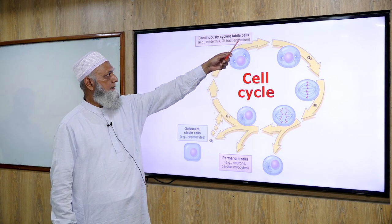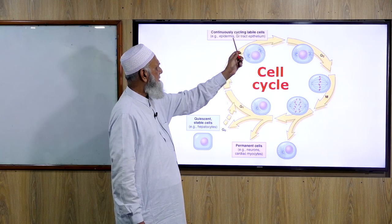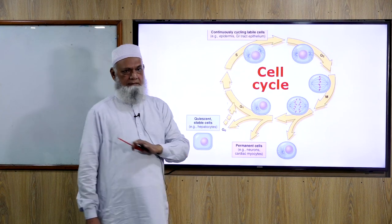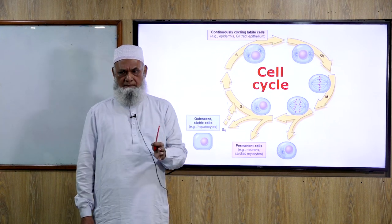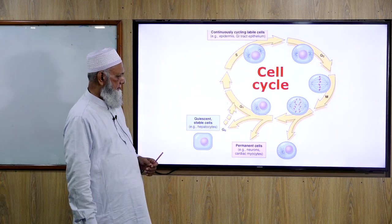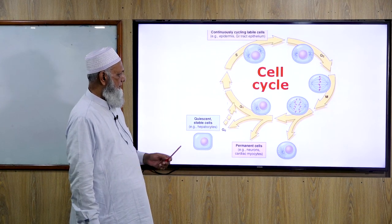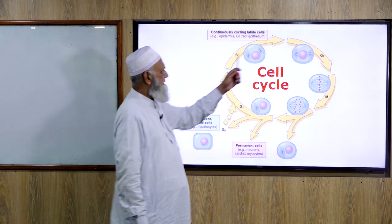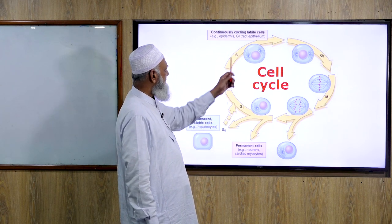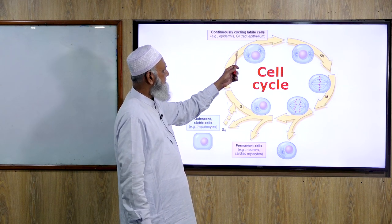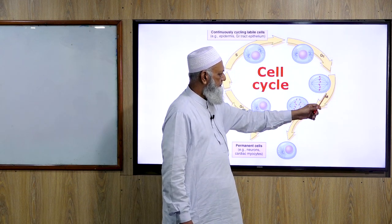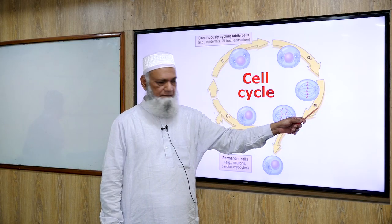Continuously cycling labile cells include epidermis, GI tract epithelium, and bone marrow cells. The cell cycle consists of G1 phase, S phase (synthetic phase), G2 phase, and M phase (mitotic phase).